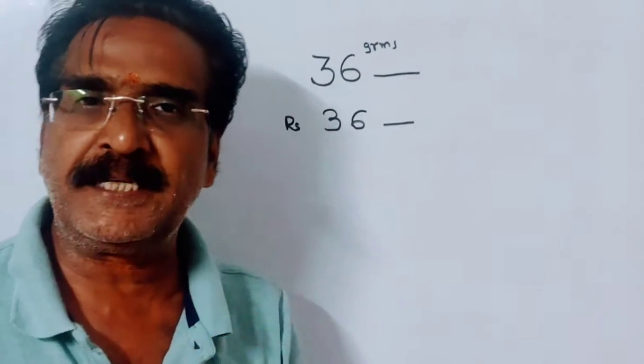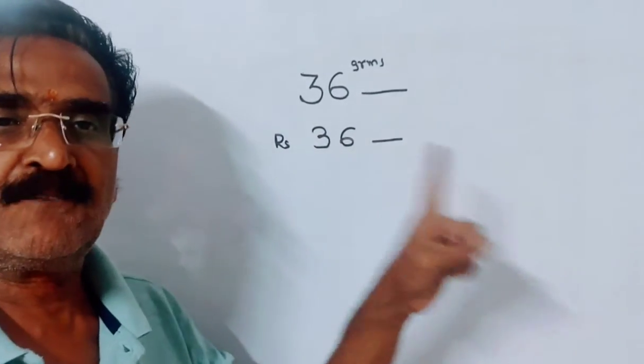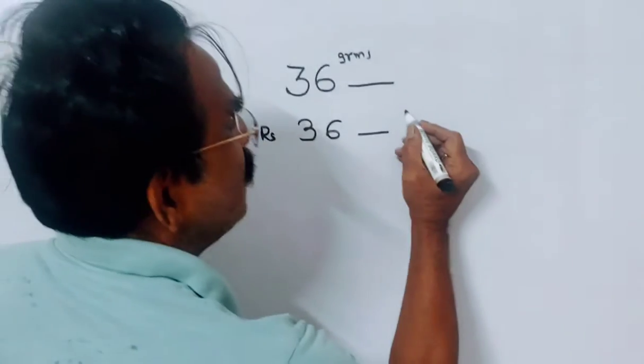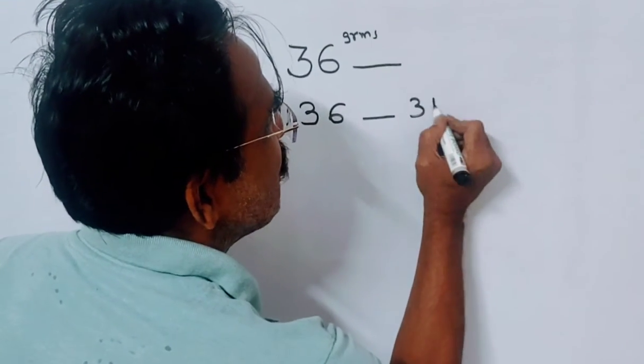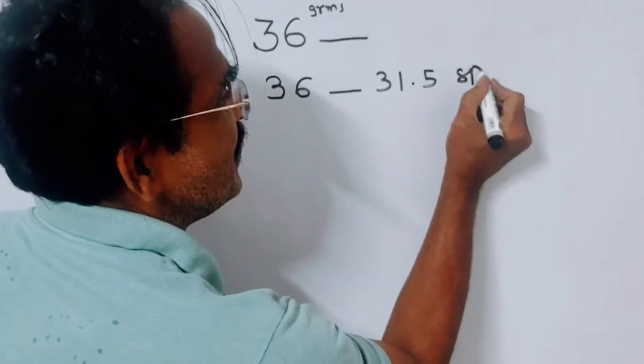12.5% means 1 by 8. 1 by 8 of 36 is 4.5. So 36 minus 4.5, so he wants to sell his goods at 31.5. Friends, this is the selling price.